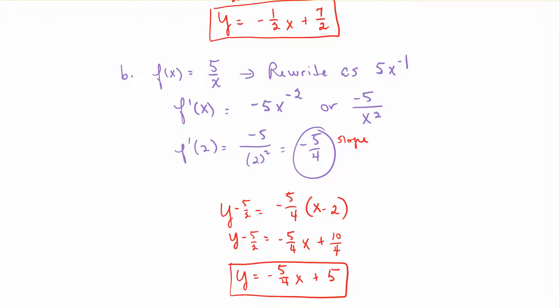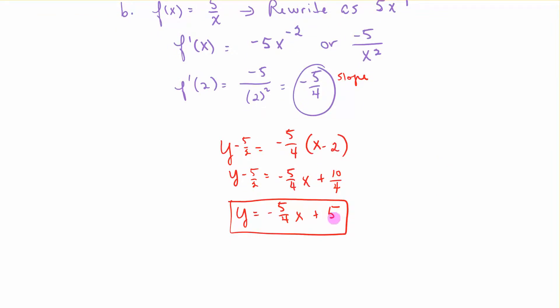To find the equation of the tangent line, we have to take the derivative. Taking the derivative of this equation, it's better to rewrite it as 5x⁻¹. When we take f', it's easier: -1 times 5 is -5x⁻², or -5/x². f'(2): we plug in 2, so we get -5/4 as our slope. Then we plug it in with one of the points. We get the equation of the tangent line. Same process each time.